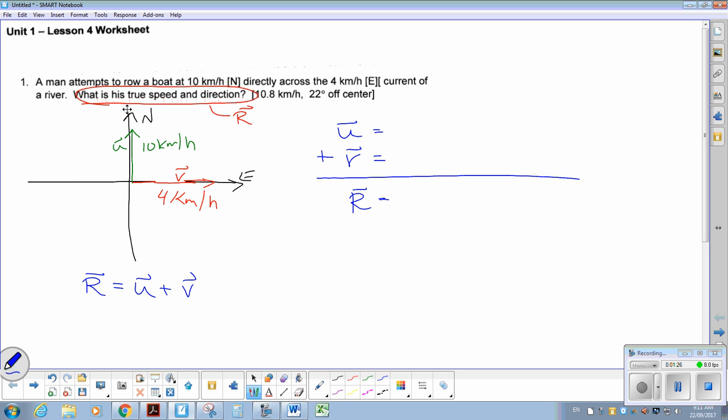So when I look at this, the U vector is heading directly north. So that means there's 0I component plus 10J. The V vector is directly east, 4I plus and no Y component, so 0J. Adding those up, the resultant will be 4I plus 10J.